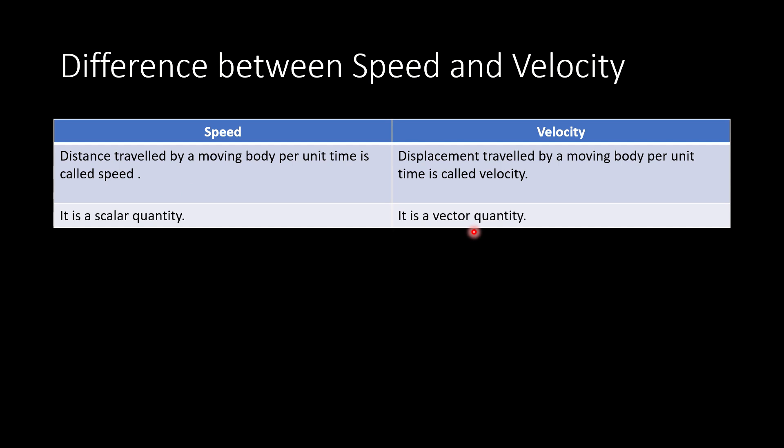Speed has only magnitude but no direction. But in case of velocity, it has both magnitude as well as direction, and the direction is specified by the symbols i-cap, j-cap, k-cap, or by negative i-cap, negative j-cap, and negative k-cap.